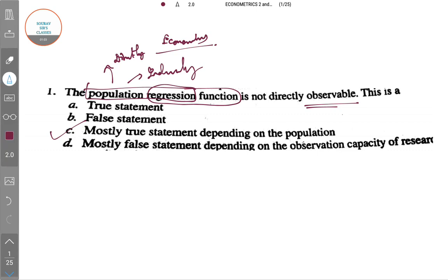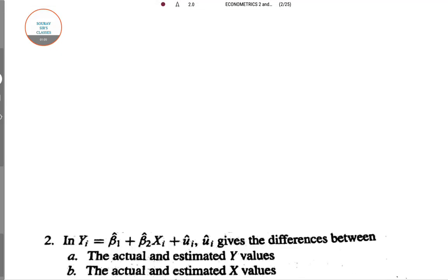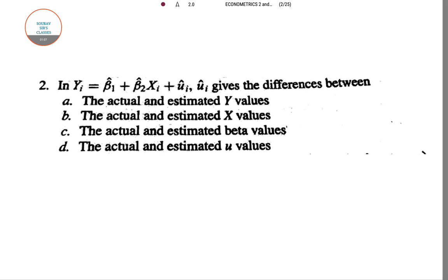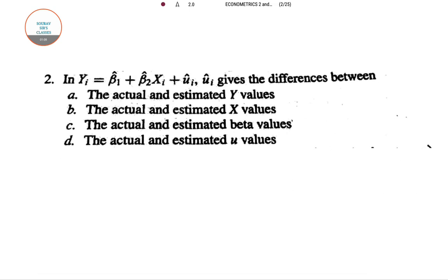Now we go to the next question. This question says log of yi equal to beta 1 hat plus beta 2 hat xi plus ui where ui is the disturbance term.